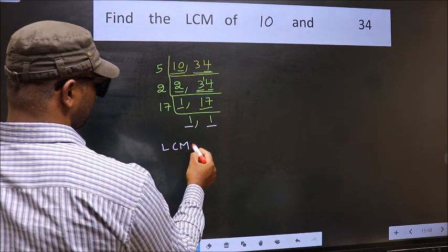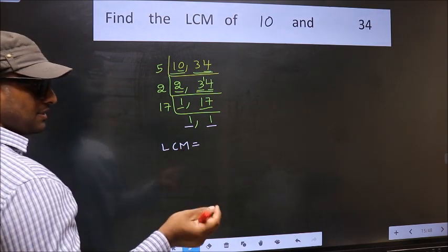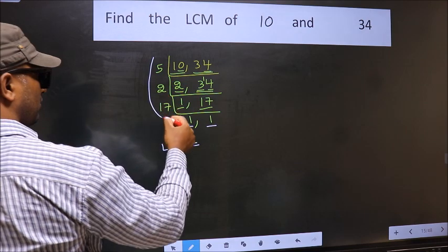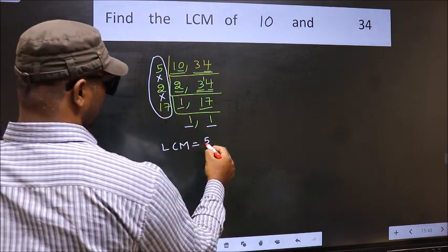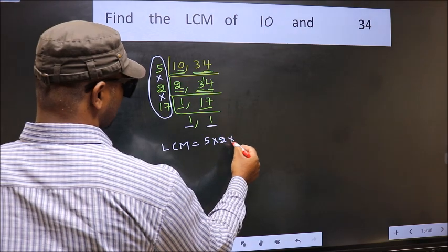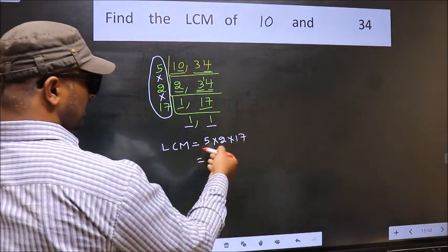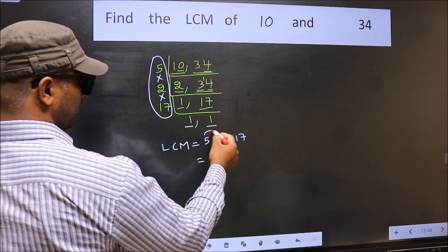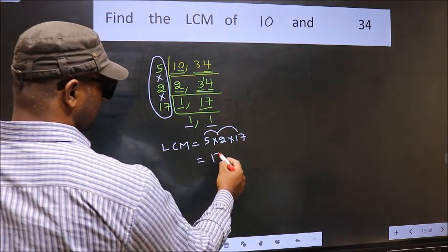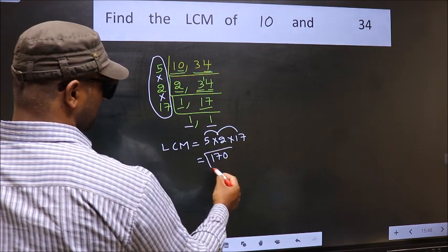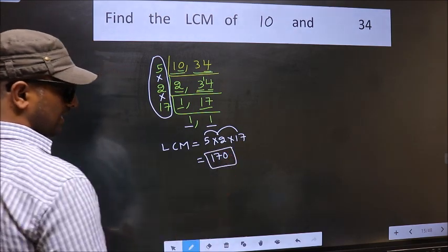So our LCM is the product of these numbers, that is 5 into 2 into 17. Let us multiply these numbers. 5 into 2 is 10, 10 into 17 is 170. So 170 is our LCM.